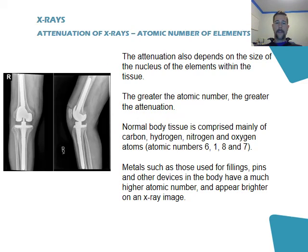The third factor that affects attenuation in your body is the atomic number of elements of the tissue. The greater the atomic number, the greater the attenuation, because the greater the atomic number, the more particles in the nucleus of that atom. A lot of the parts of the body are comprised mainly of carbon, hydrogen, nitrogen, and oxygen, with low atomic numbers. If you have any metal parts in your body, they have a high atomic number, so they attenuate more of the x-rays and stand out more on the film.